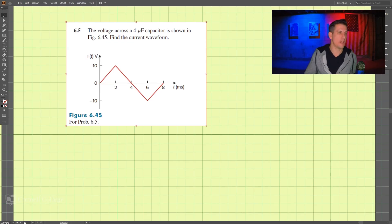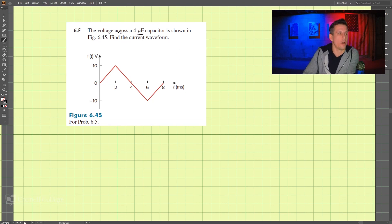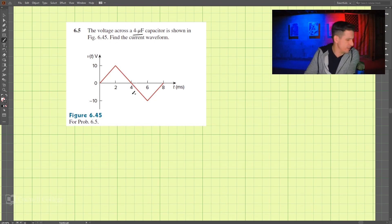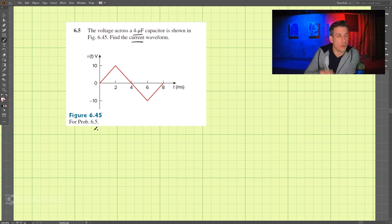This is problem 6.5, and we have a 4 microfarad capacitor. We're supposed to find the current waveform — we want to find the current. We know the current is equal to the capacitance times dv/dt.